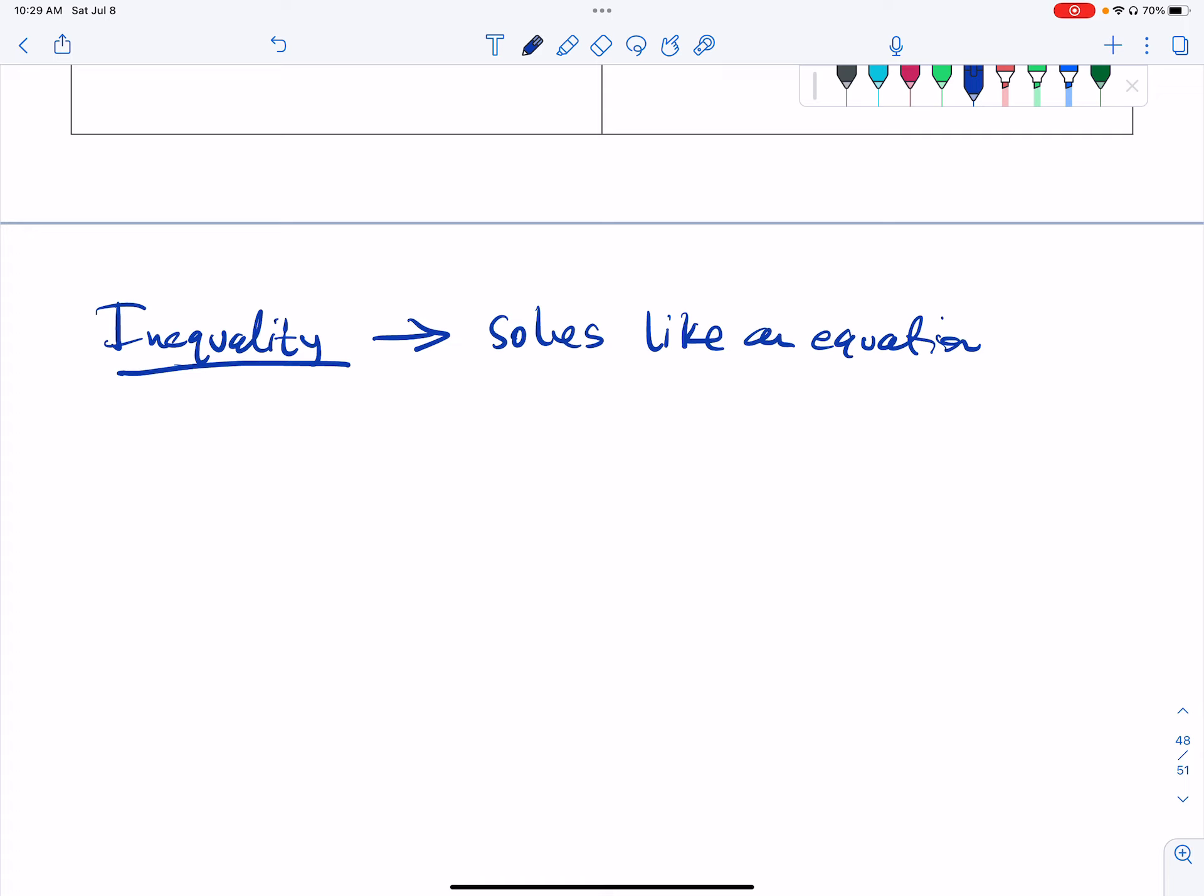The first thing is that you have to deal with flipping the sign when you multiply or divide by a negative number. So number one, multiply, divide by negatives. And what does that do? That flips the inequality.